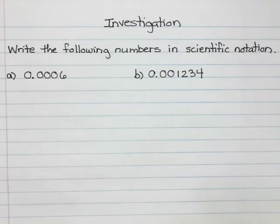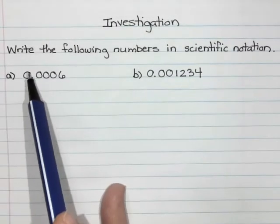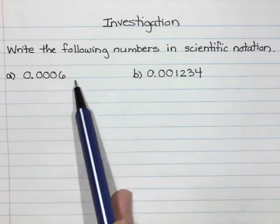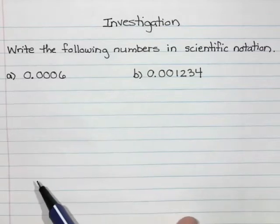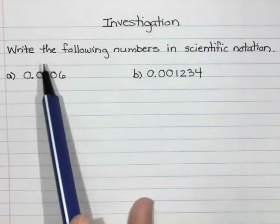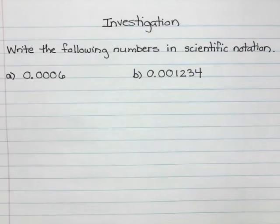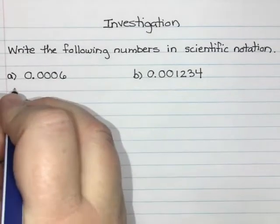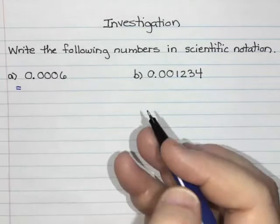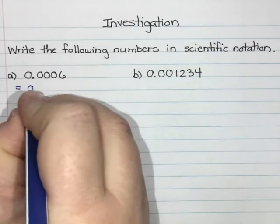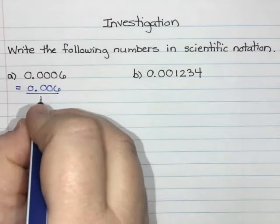Our question here says write the following numbers in scientific notation, and I have the number 0.0006. So when we were doing the large numbers we kind of broke this down as a multiplication question, but since this is a decimal and quite a small number, instead of using multiplication I'm going to actually try to do this with division. So I'm going to say that 0.0006 is the same thing as 0.006 divided by 10.